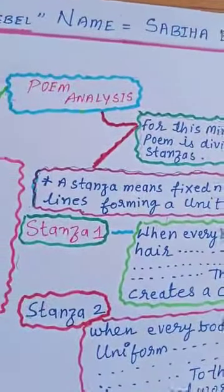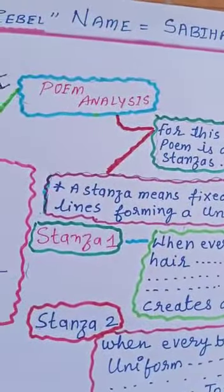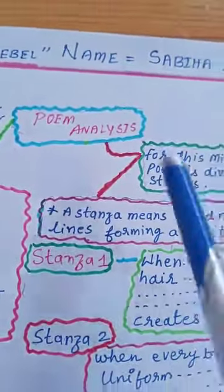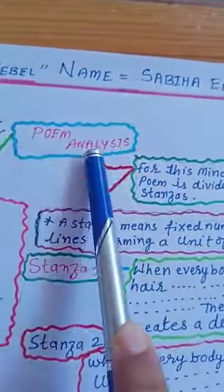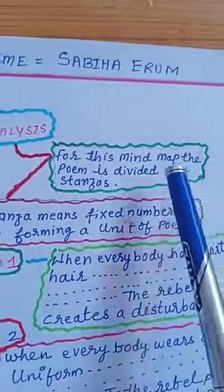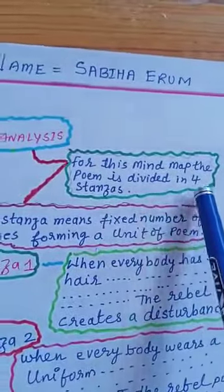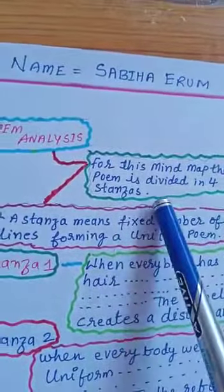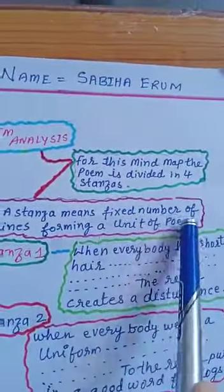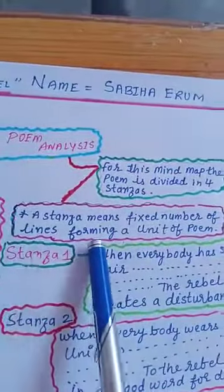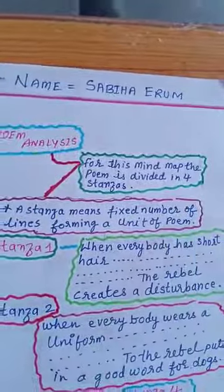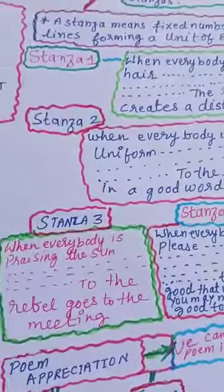What I showed so far was the introduction. Now we will analyze the poem. For this mind map, the poem is divided into four stanzas. A stanza means a fixed number of lines forming a unit of a poem.